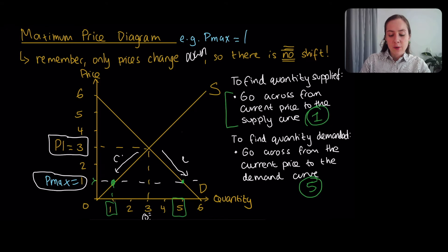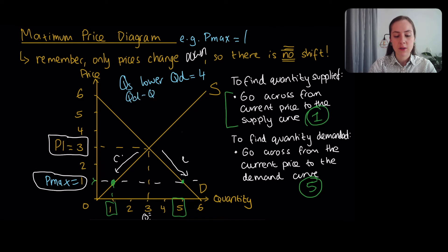So in other words, we have a difference between the supply and the demand. Specifically, we've got the quantity supplied being lower than the quantity demanded. And the difference here is actually 4 units. So Qd minus Qs is equal to 4 units.